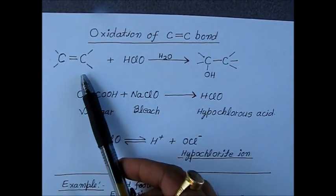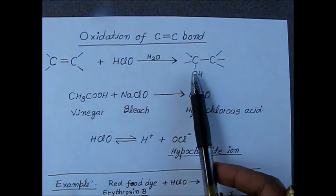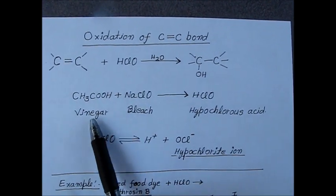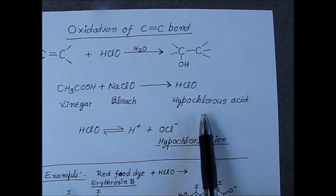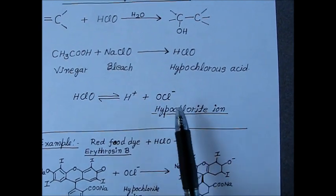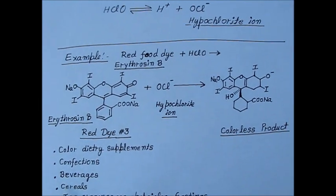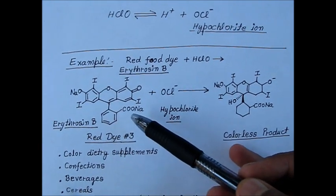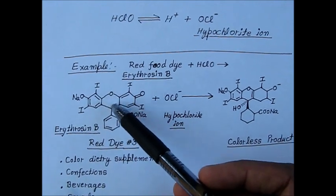In this experiment, we will use an alkene and hypochlorous acid in water to form an alcohol. Hypochlorous acid will be generated through the vinegar and bleach reaction. It is a weak acid that usually exists as a hypochlorite ion and hydrogen ion. One common red color dye is food dye called Erythrosine B.